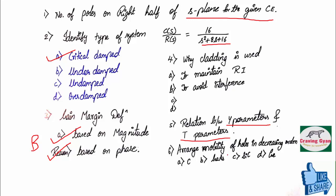And sixth question, you have to arrange mobility of holes in descending order. They have given carbon, gallium arsenide, silicon carbide and germanium.